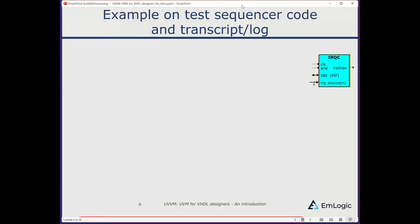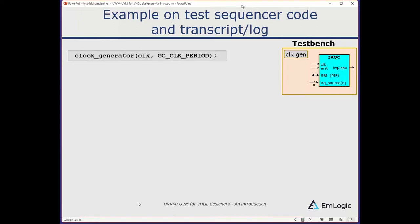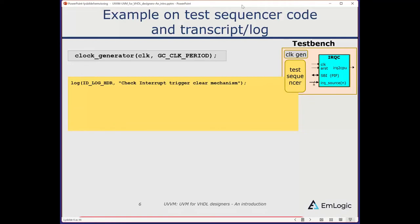Let's look at an example of a simple test sequencer code for UVVM. Assume we have a simple interrupt controller with clock, reset, a simple bus interface to access internal registers, a number of interrupts coming in, and resulting interrupts to the CPU. To make a testbench, we need a clock generator, which can come straight out of the UVVM utility library by instantiating a procedure directly in your architecture as a concurrent procedure working exactly as a process. Then you have a test sequencer — that's basically all you need in a simple testbench.